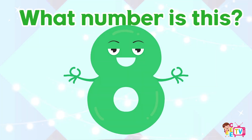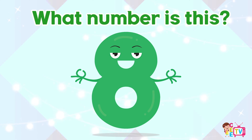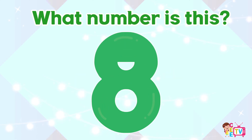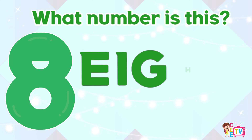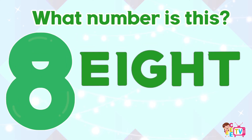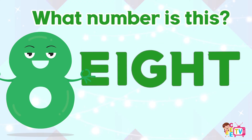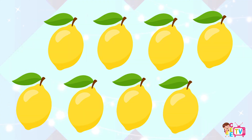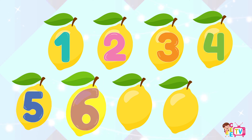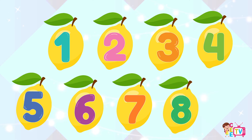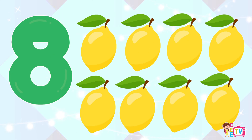What number is this? This is number 8. E, I, G, H, T. 8. Yes, you are right. This is number 8. 1, 2, 3, 4, 5, 6, 7, 8. 8 lemons.